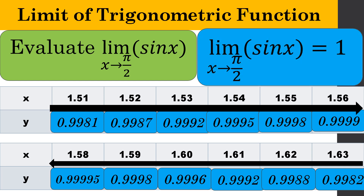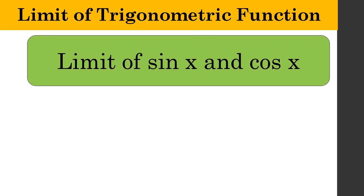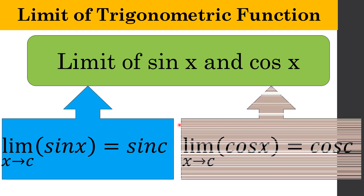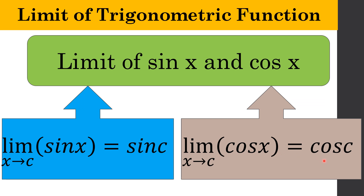Therefore, the limit of sin x as x approaches pi over 2 is 1. Because y equals sin x and y equals cos x are continuous functions, they are defined for any real number x. So we can say that the limit of sin x as x approaches c is equal to sin c, and the limit of cos x as x approaches c is equal to cos c. We will use direct substitution to evaluate these limits.